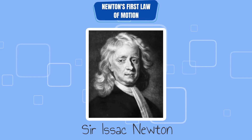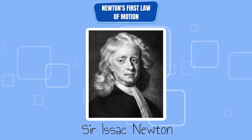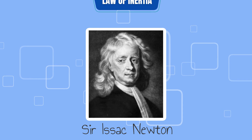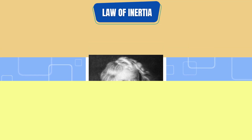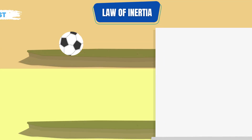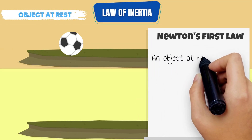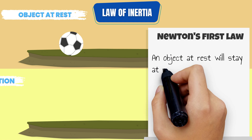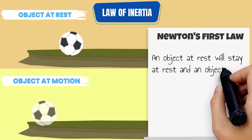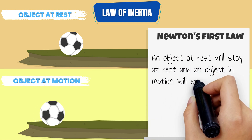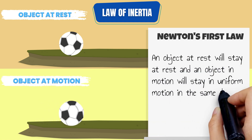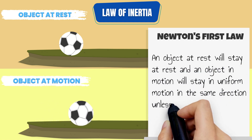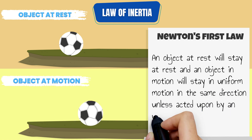According to Newton's first law of motion, which is also known as the law of inertia, an object at rest will stay at rest, and an object in motion will stay in uniform motion in the same direction unless acted upon by an unbalanced force.